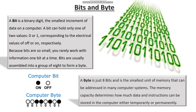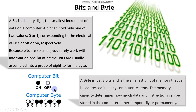Bits and bytes. A bit is a binary digit — the smallest increment of data on a computer. A bit can hold only one of two values: either 0 or 1, corresponding to the electrical values of off or on respectively. Because bits are so small, you rarely work with information one bit at a time. Bits are usually assembled into a group of eight to form a byte. One bit is of no use by itself — when we say a computer byte, we use eight bits to make a byte.